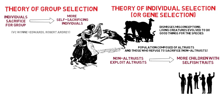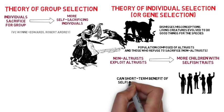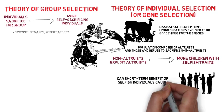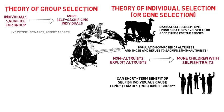Dawkins acknowledges that this does not preclude the fact that groups die out, and that if individuals had restrained their selfish greed it would have prevented the destruction of the whole group. However, group extinction is a slow process, and the selfish individual would still prosper in the short term at the expense of the altruists.